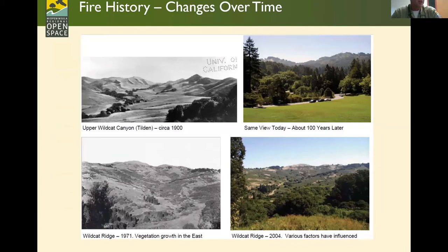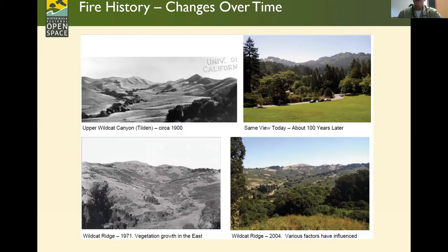When you suppress fire, interesting changes occur. Photos from the East Bay show that in the 1900s vegetation was very open grassland — some altered by fire, some by grazing — but once fire was suppressed and grazing removed, things get forested and brushed over dramatically over a hundred years. You can see the same thing happening on mid-pen land: places like Windy Hill that used to be grassland when grazed are now covered with brush — and without fire, where will they be in the next 50 or 100 years?